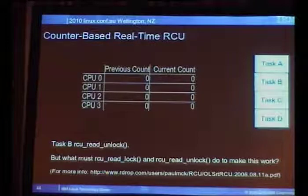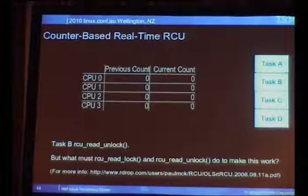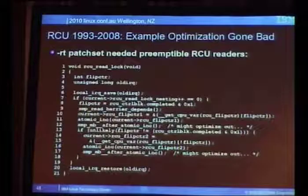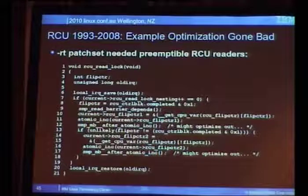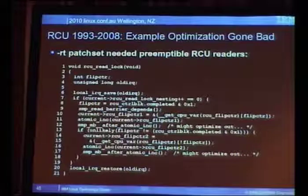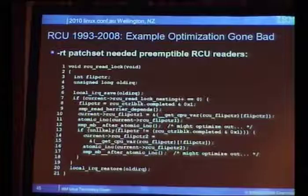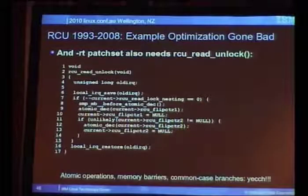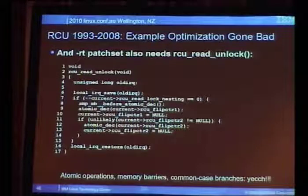The problem with this approach is a fair amount of stuff in the implementation. RCU read_lock went from one line to 21 lines, containing memory barriers and atomic instructions. RCU read_unlock is similarly large at 17 lines, also containing memory barriers, atomic instructions, and branches taken in the common case. It got the job done, but you'd like to do better.